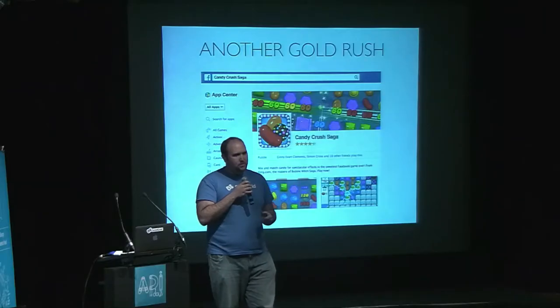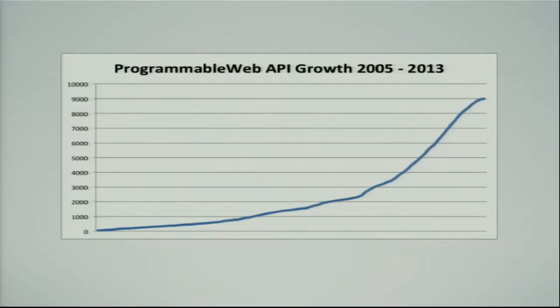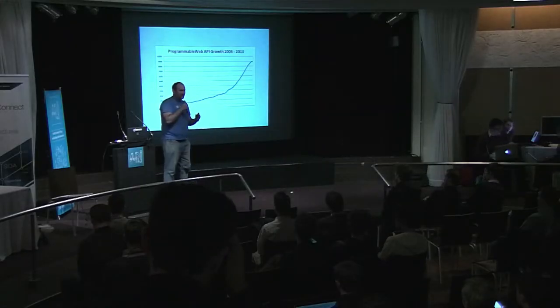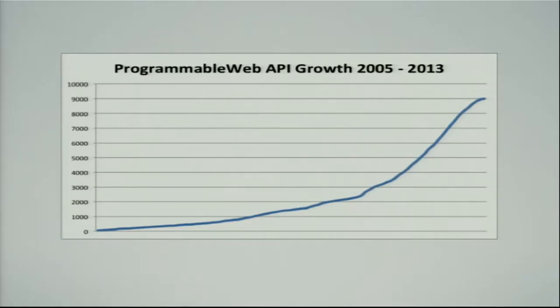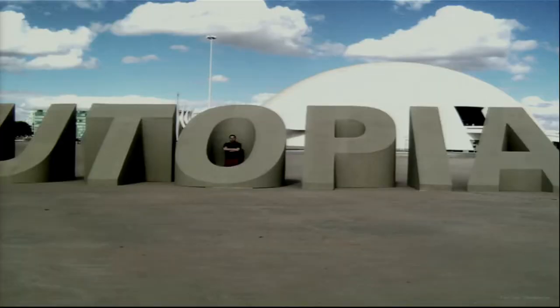A couple of years after that, Facebook opens up their platform so any apps can be on Facebook, another crazy rush where everything had to be within Facebook. And from those two examples of developers running toward these platforms, many, many APIs launched — perhaps with the wrong ambitions. Sort of a 'build it and they will come' mentality.